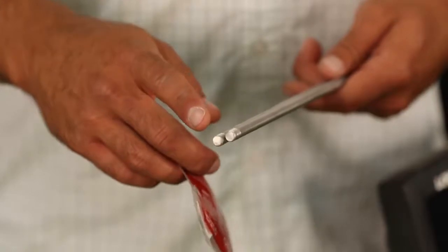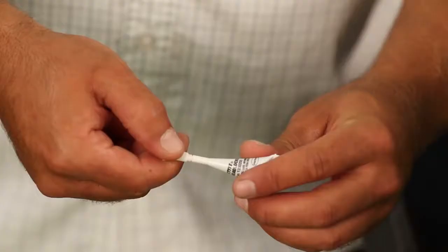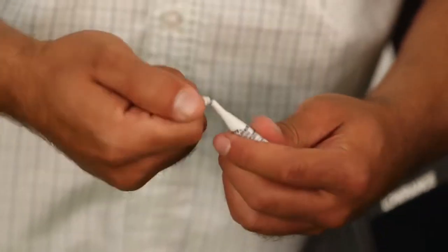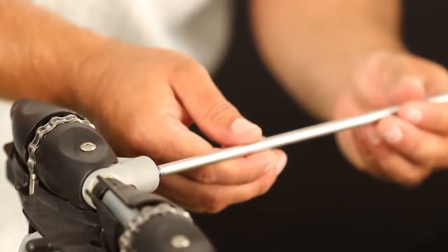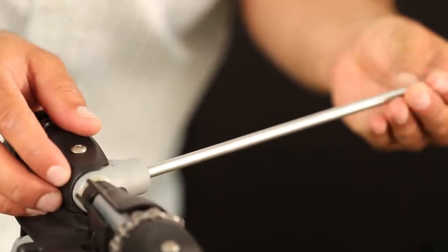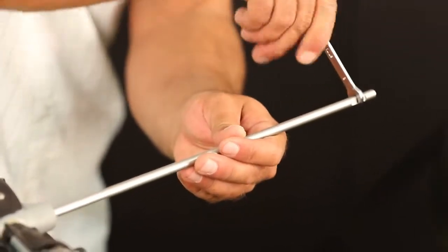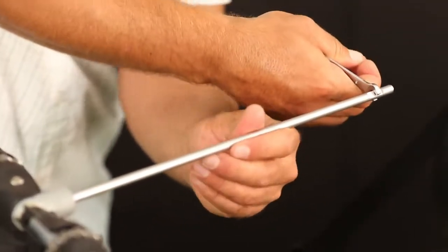Before you thread the turbo fin mast into the drive, you're going to want to place a couple drops of the included Loctite in the turbo fin kit onto the threads at the top of the fin masts. Tighten it up by turning the fin mast clockwise.